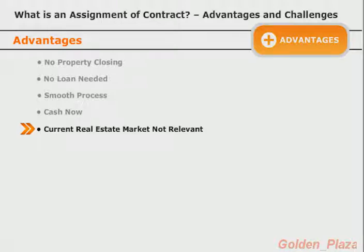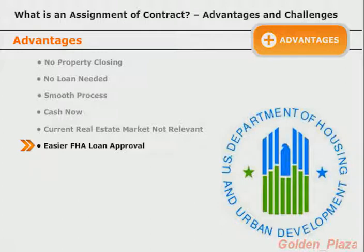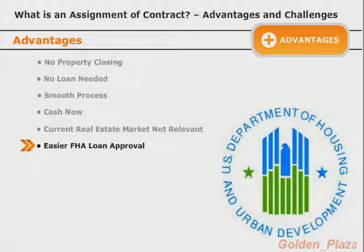You do not have to worry about days on market, vacancy rates, or any other issues related to market changes — those are issues the investor/buyer has to worry about, not you. FHA loans require that the seller has owned the property for a certain period of time, usually 90 days, before the buyer can qualify for an FHA loan. However, with an assignment of contract there is no transfer of title, so the buyer could still qualify for an FHA loan. If an investor wants to quickly sell a property to an owner-occupant who needs FHA financing, they cannot do it quickly unless they do an assignment of contract.